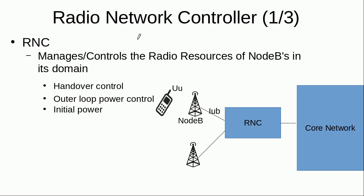The Radio Network Controller manages and controls the radio resources of the Node Bs connected to it. Radio resources are the parameters involved in radio communication — for example, the power at which the Node B transmits is a radio resource, and the handover parameters when a mobile moves from one Node B to another are also radio resources. All these radio resources are managed by the Radio Network Controller for the Node Bs connected to it.